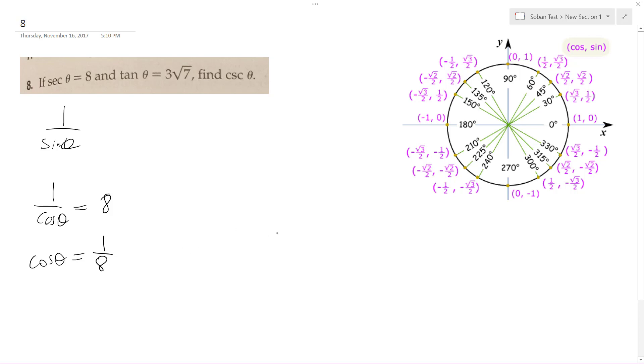so that means that this is going to be in quadrant 1. This is 3 root 7, this is 1, and this is 8.